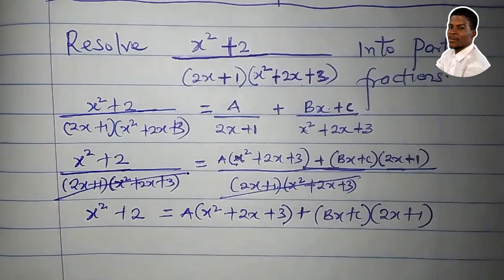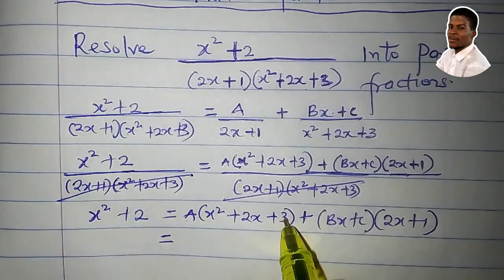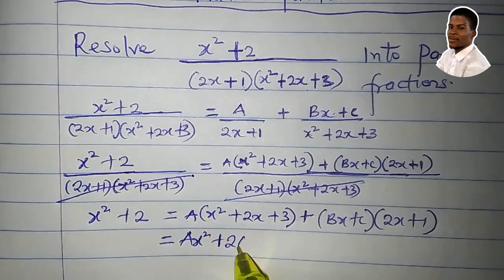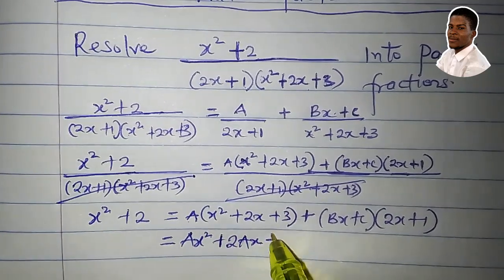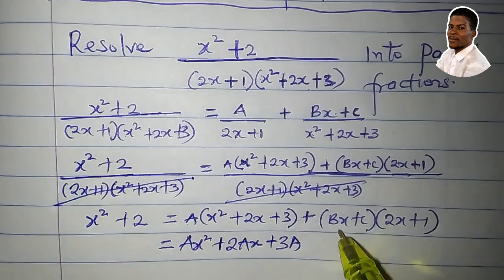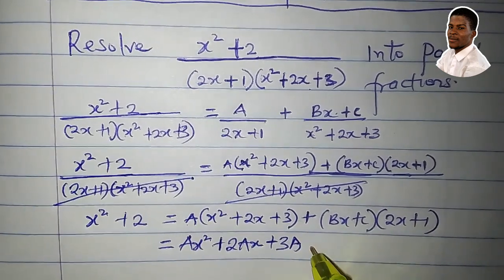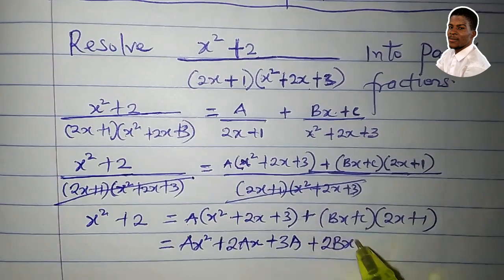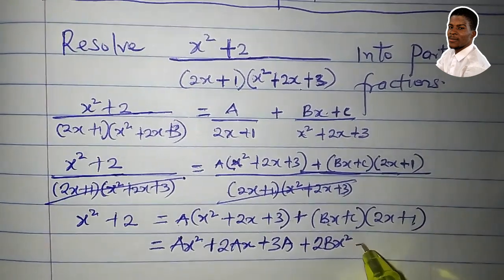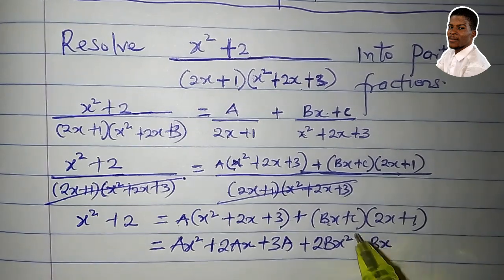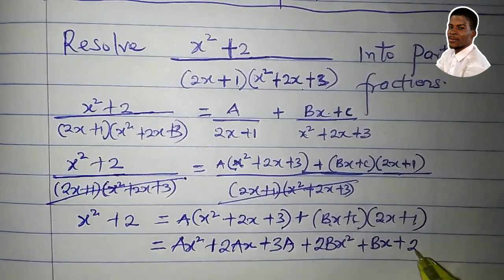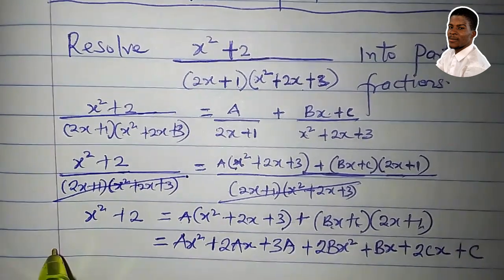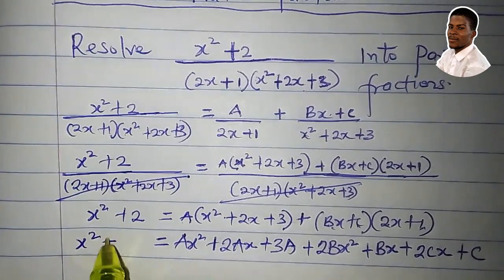Let's expand now. A multiplies each term in the bracket: ax²+2ax+3a. Then expanding (bx+c)(2x+1): bx times 2x gives 2bx², bx times 1 gives bx, c times 2x gives 2cx, and c times 1 gives c. So the right-hand side is ax²+2ax+3a+2bx²+bx+2cx+c. The left-hand side is x²+2.